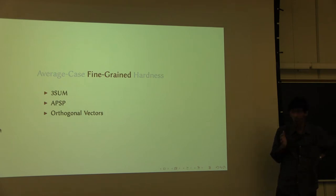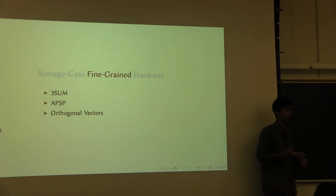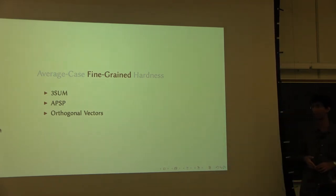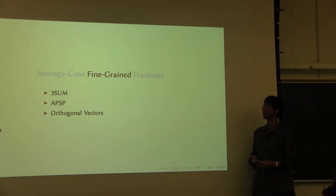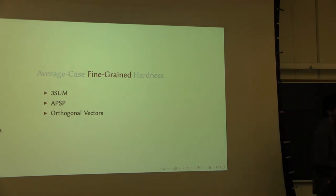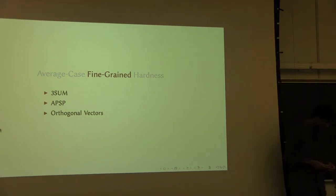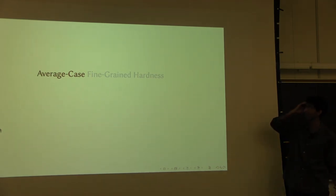One thing about the field of fine-grained complexity so far is that it has been a study of worst-case fine-grained complexity. When you say the efficiency of solving a problem, you usually mean the efficiency of solving it in the worst case — you want to be correct on all possible inputs. What we asked in our paper, the questions we tried to answer, are: can you come up with a reasonable study of the average-case analog of this — an average-case fine-grained complexity? Can you relate the complexities of solving these problems in the average case?